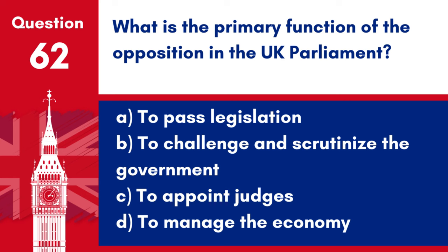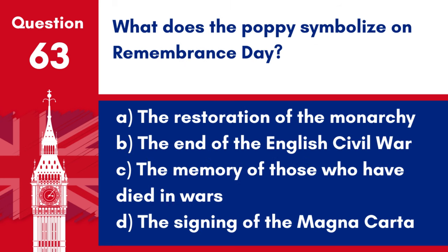Question 62. What is the primary function of the Opposition in the UK Parliament? a. To pass legislation. b. To challenge and scrutinise the Government. c. To appoint judges. d. To manage the economy. Answer: b. To challenge and scrutinise the Government. The primary function of the Opposition in the UK Parliament is to question and challenge the policies and actions of the Government, providing a necessary check and balance.